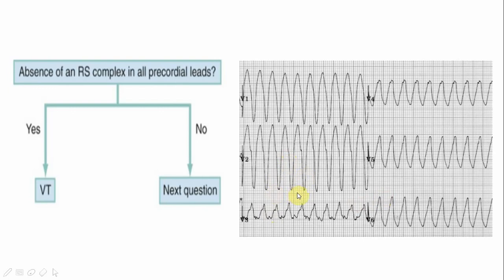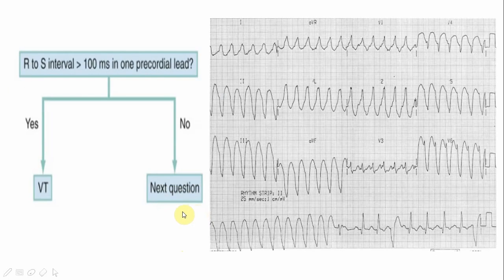If concordance cannot be found across V1 to V6 we move to Step 2: the Brugada sign. From the beginning of the QRS complex to the nadir of the S wave in any precordial lead — if that distance is more than 4 small squares (approximately 160 ms, which is well above the 100 ms threshold) — the Brugada sign is present and this is VT.